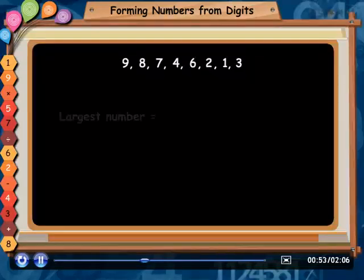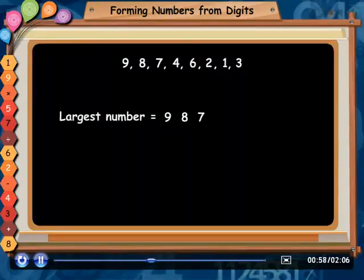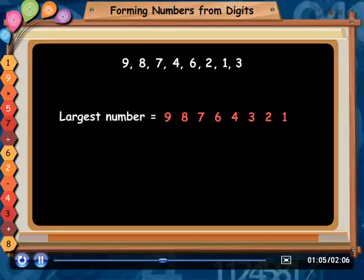And for the largest number, we write numbers in descending order, like this. Largest number is equal to 98764321.